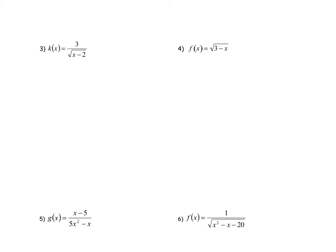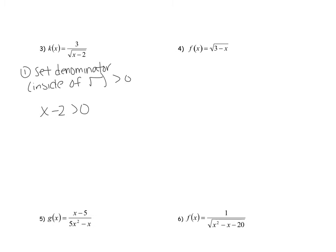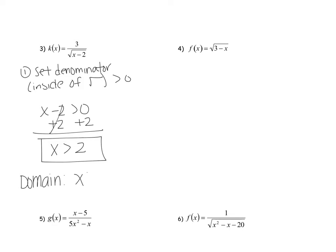Here is example number 3. Whenever we have a radical in the bottom of a fraction, we set the inside of the radical greater than 0 — can't be equal to 0, so just greater than. So we say x minus 2 is greater than 0. Add 2 to both sides, and you get x is greater than 2. The domain is all x values that are greater than 2. So this is your answer.